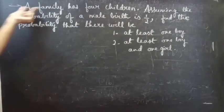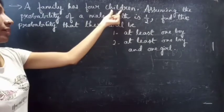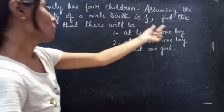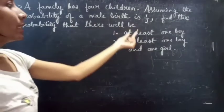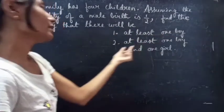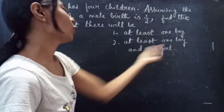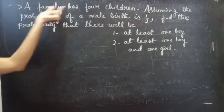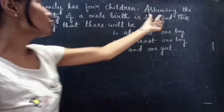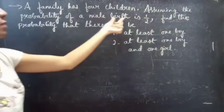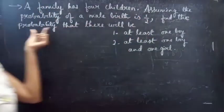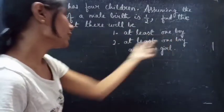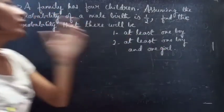Problem. A family has four children, assuming the probability of a male birth is one by two, find the probability that they will be: first, at least one boy; second, at least one boy and one girl.